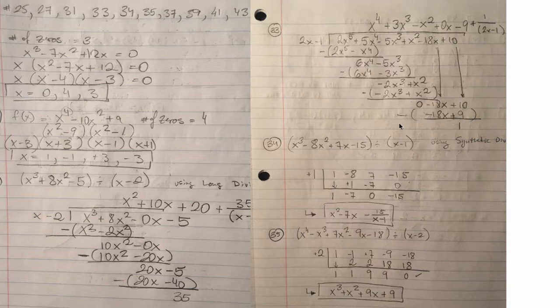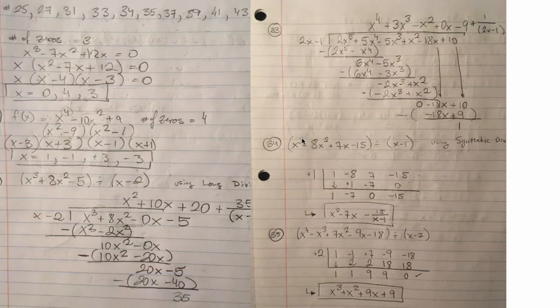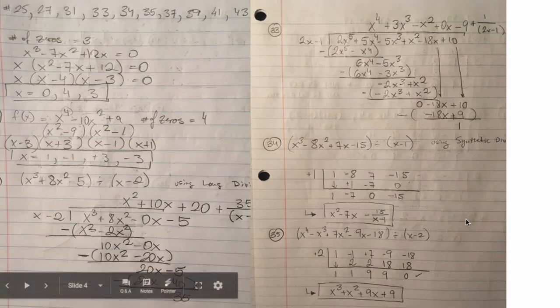All right, 34 is synthetic division. It's the same thing as long division, but it's kind of like a shortcut, the quicker way. So we write the coefficients right here. So there's 1, negative 8, 7, negative 15. And then here, you just have to solve for the factor. So if this was x minus 1 equals 0, we would say x is 1. So you drop the 1, then you multiply 1 times 1, put it right there, add them up. You get negative 7 times 1. Put that right there, add them up. 0 times 1. Put that there, add them up. You get negative 15. And then there's your remainder, negative 15 over the binomial.